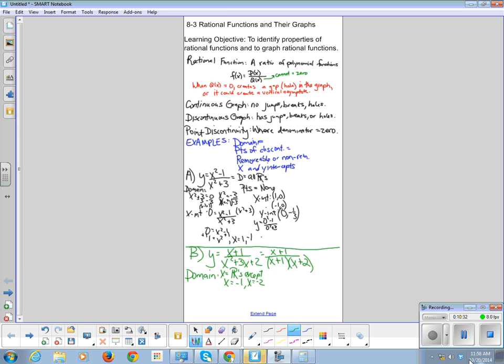The points of discontinuity are x equals negative 1 and x equals negative 2. Are they removable or non-removable? I will tell you this: one of them is removable, one of them is not removable. The way to tell if you're removable, you cancel out. If you're non-removable, you don't cancel. So because this x plus 1 and this x plus 1 will cancel out, so this guy is removable and this guy is non-removable.